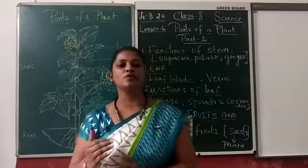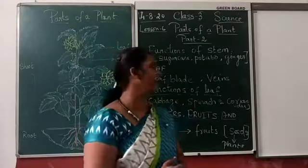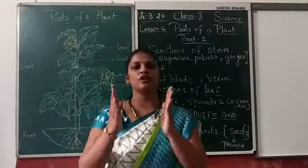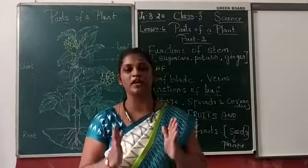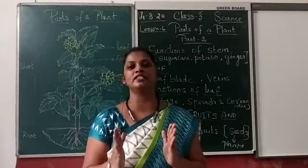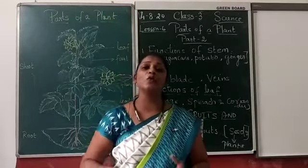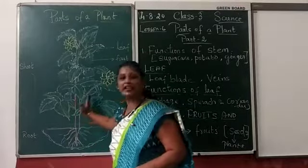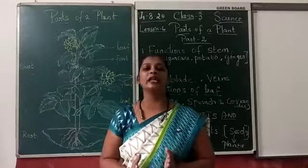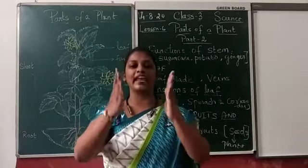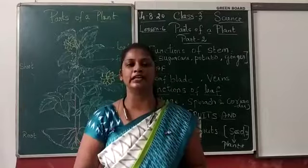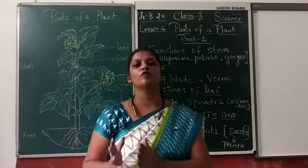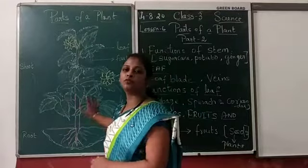So, structure कैसे हमको मदद करते हैं? अभी हम लोग देखने वाले हैं functions of stem. Stem के functions क्या हैं? Trunk grows, and the stem which is bigger in size is called trunk. How it is helpful for the plant — if it is bigger in size, it will help the tree to grow upright. ऊपर एकदम straight grow करने के लिए वो मदद करते हैं। Stems, whether bigger or smaller in size, उनको upright करने के लिए मदद करते हैं।